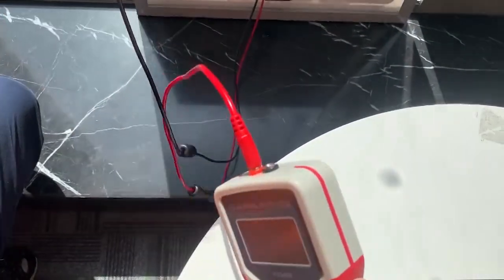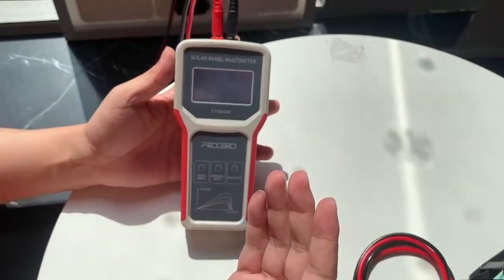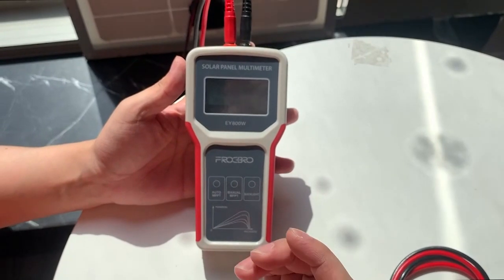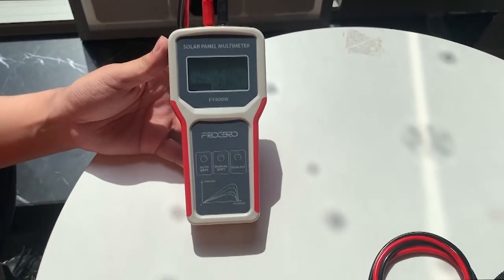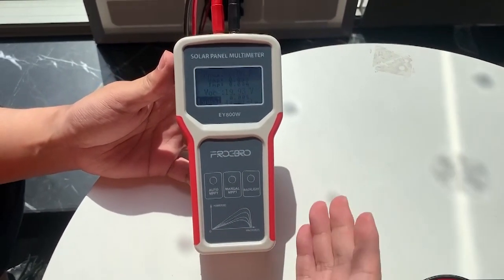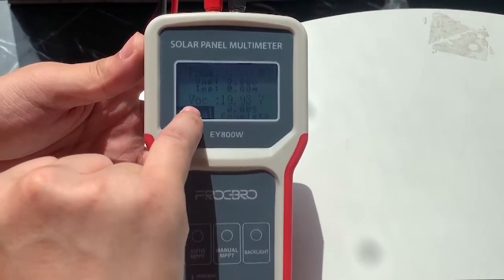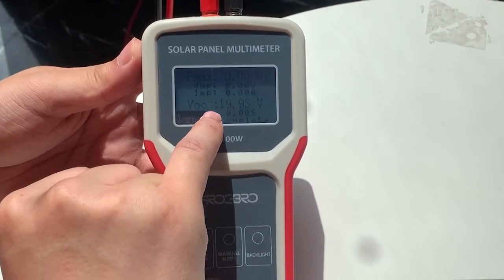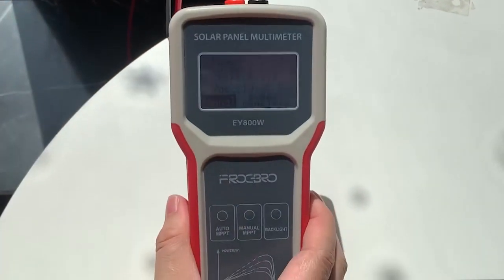The positive to the positive, the negative to the negative. Now you can see it's turning on right now. You can see the data clearly. We just need to press the backlight button. Now you can see the data very clearly, right? This is the open circuit voltage and the power of the solar panel.